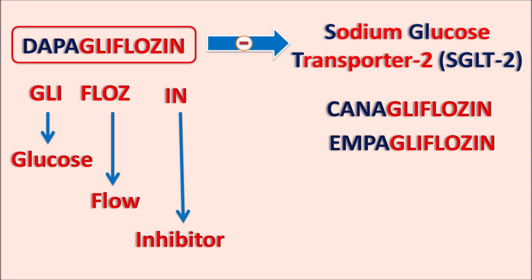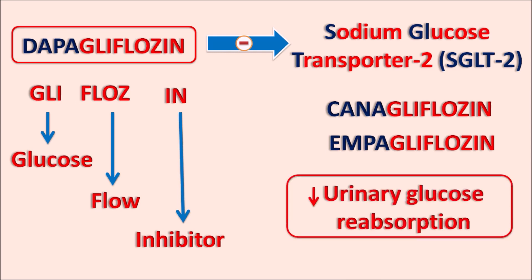So all these drugs — Dapagliflozin, canagliflozin, and empagliflozin — inhibit sodium glucose transporter 2, thereby inhibiting urinary glucose reabsorption, resulting in increased excretion of glucose. When glucose is excreted, serum levels are reduced. That is why drugs like Dapagliflozin are indicated in type 2 diabetes mellitus.